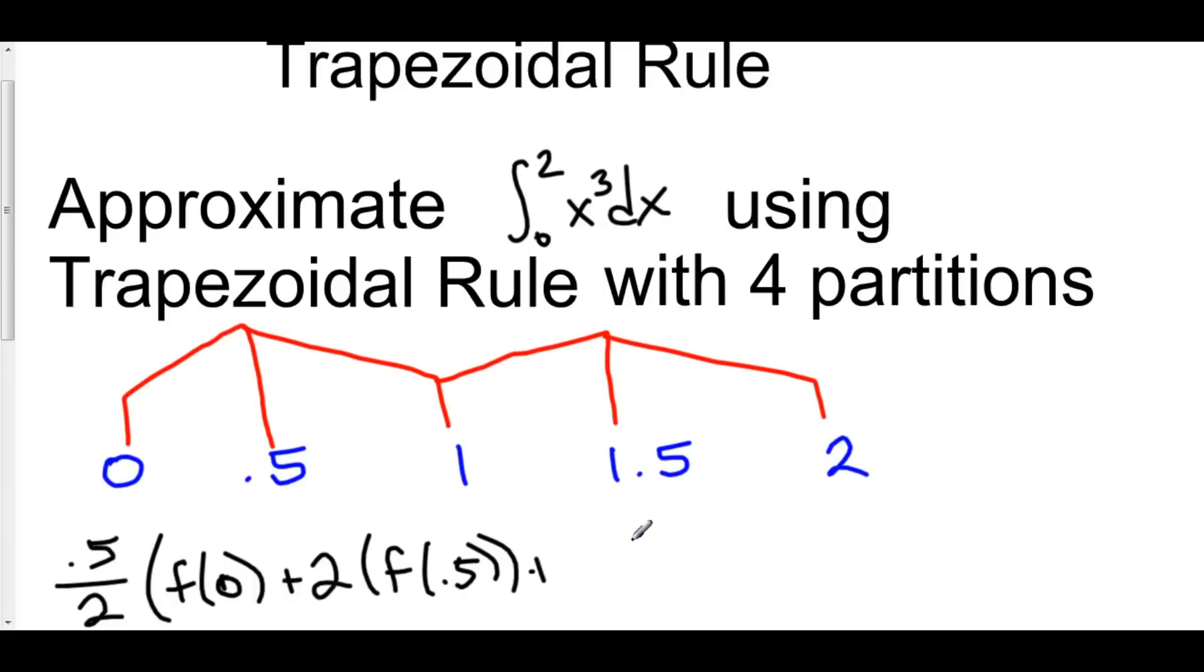Again, 1 here is the right hand side of my second trapezoid, and the left hand side of my third trapezoid. So, we have 2 times f of 1.